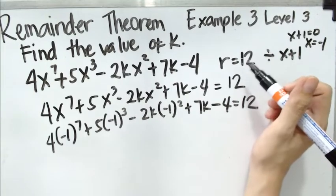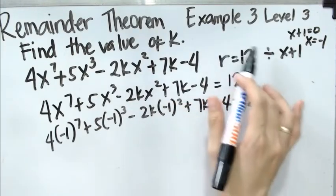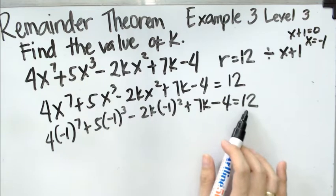According to the given, if we divide the polynomial by this one, we are going to have 12 as the remainder. That's why we have equals to 12.